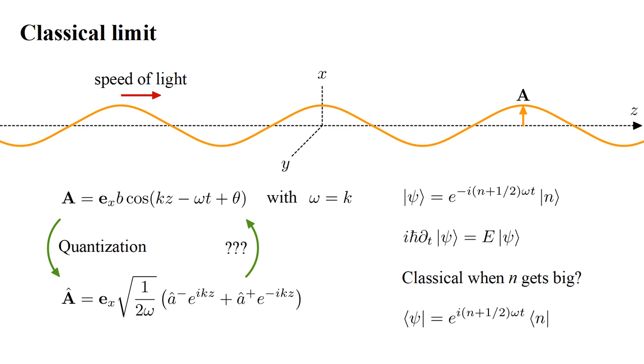Now, we already have a problem. When we multiply these conjugate exponential factors together, we'll get their squared magnitude, which is just one. So all time dependence will vanish. Therefore, we cannot end up with anything like the classical expression.